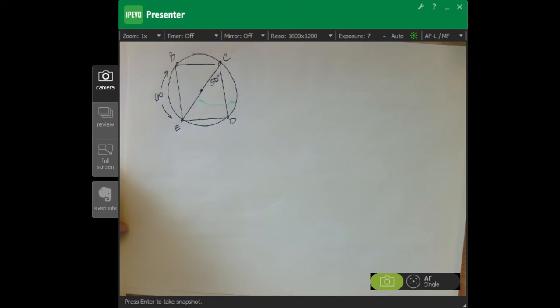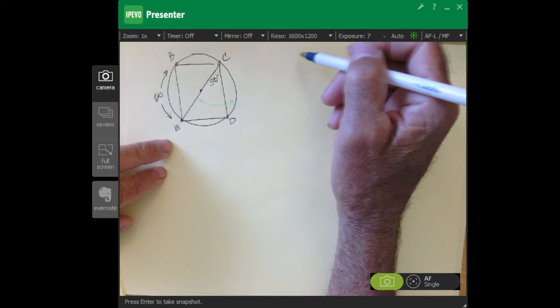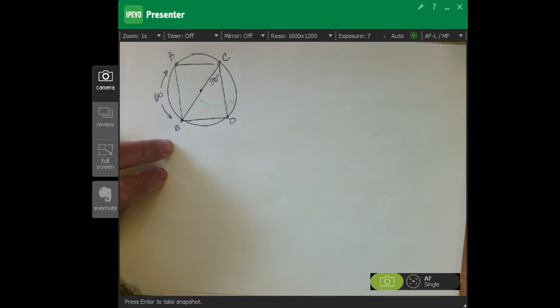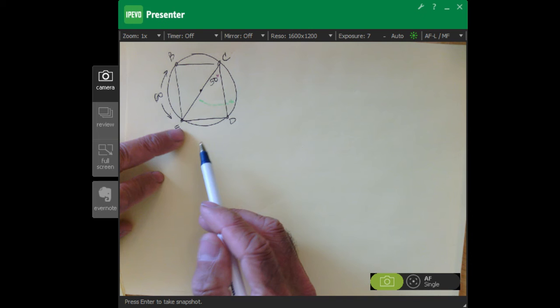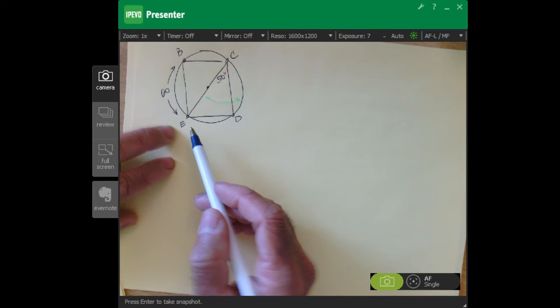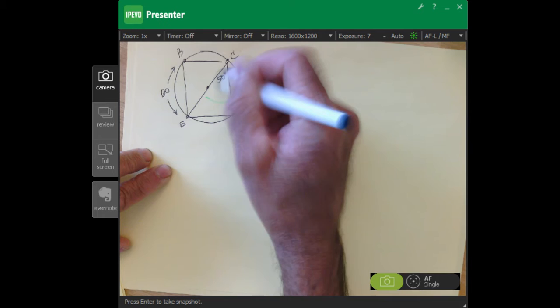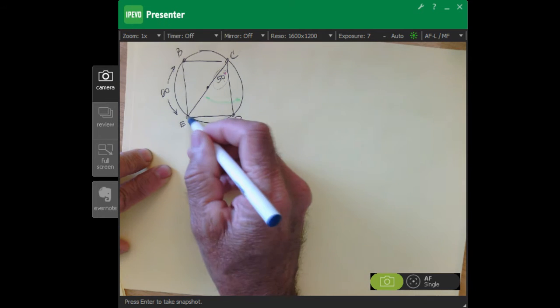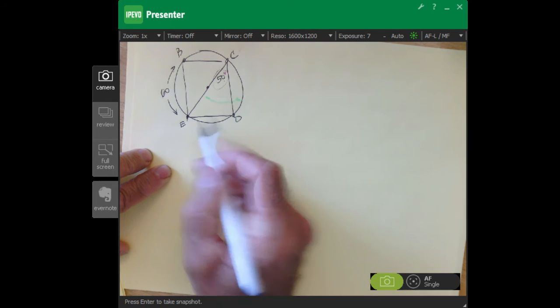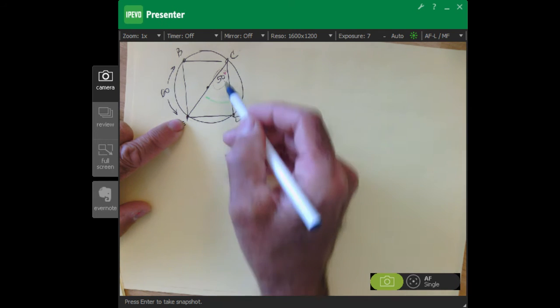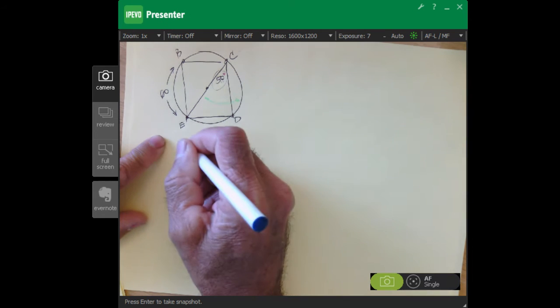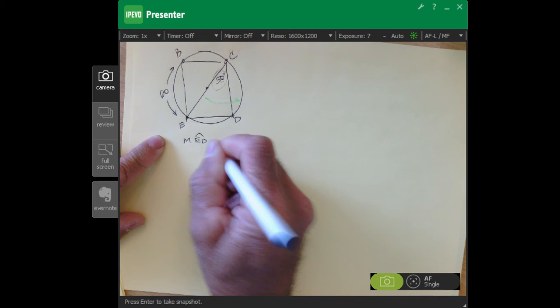First we talked about the difference between finding the answer directly and indirectly. The easiest questions are the ones where you find it directly from a basic theorem or definition. The first thing we found was using the inscribed angle theorem - the arc that it cuts off is going to be twice as big as the angle. So we found the measure of arc ED, and that was 100 degrees.